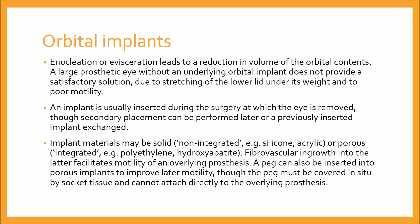Implant materials may be solid non-integrated — for example, silicone or acrylic — or porous integrated — for example, polyethylene or hydroxyapatite. Fibrovascular growth into the latter facilitates motility of an underlying prosthesis. A peg can also be inserted into the porous implants to improve motility, though the peg may be covered in situ by socket tissue and cannot attach directly to the overlying prosthesis. The motility of unbanked implants is also usually good, particularly if donor sclera or mesh wrap is used and the extraocular muscles are secured to the surface.